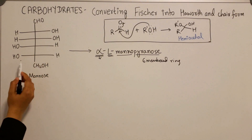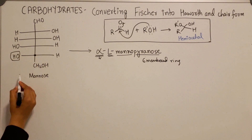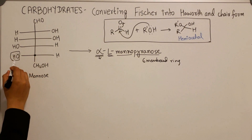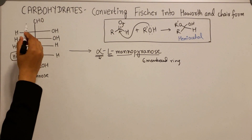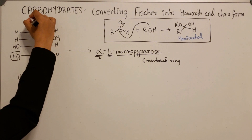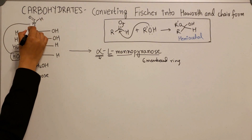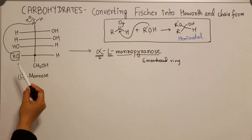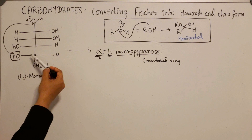This is an L sugar because the hydroxy group at the relevant carbon is on the left — so it is already L-mannose. In order to form a six-membered ring, you use the lone pair on this particular hydroxy group to attack the electrophilic carbonyl. You can see that when these lone pairs attack the carbonyl group, a six-membered ring is formed — counting one, two, three, four, five, six.